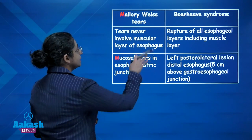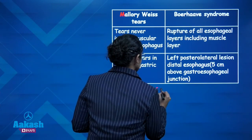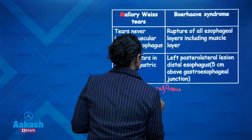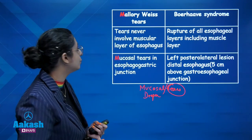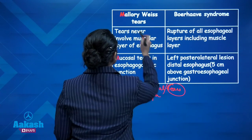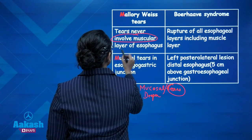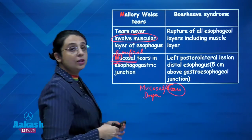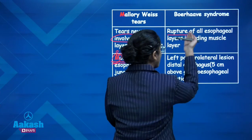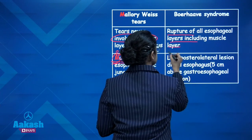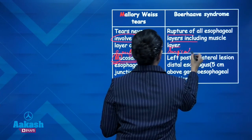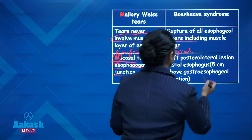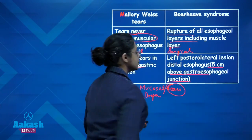Next is Mallory Weiss tears and Boerhaave syndrome. These are mucosal tears in response to excessive retching. Mallory Weiss syndrome never involves the muscular layer — these are superficial mucosal tears which usually do not require surgical intervention. Boerhaave syndrome involves rupture of all layers including the deeper muscle layer, thus requiring immediate surgical intervention. The most common location in Mallory Weiss tears is the esophagogastric junction, whereas in Boerhaave syndrome it is 5 cm above the gastroesophageal junction.